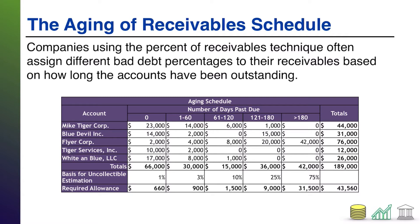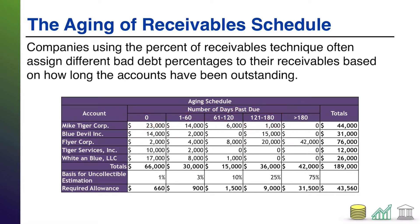An aging schedule simply refines that process further. An aging schedule is a variation of the allowance method for accounting for bad debts. What the aging schedule does is, instead of taking all of your AR and multiplying it by a flat percentage and saying that's the bad debts, it divides your AR into multiple buckets. Now these buckets here are just for example purposes — every company can use its own set of buckets.